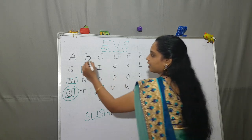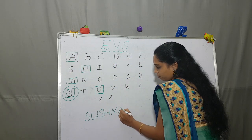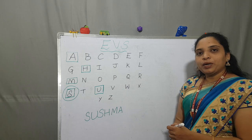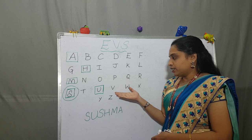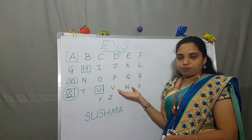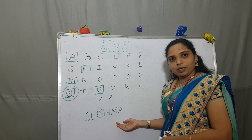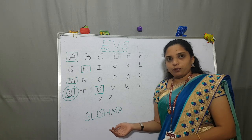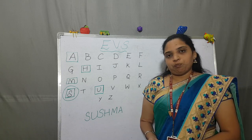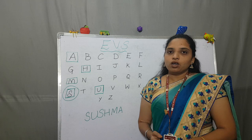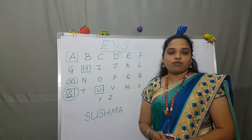And the last letter is A. So my name is Shushma — S, U, S, H, M, A. I have found all the letters in A to Z. Whenever you are introducing your name to others, you have to know your name and also know the spelling of your name.